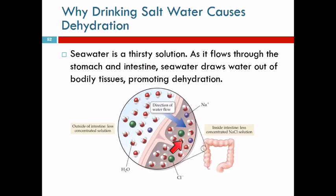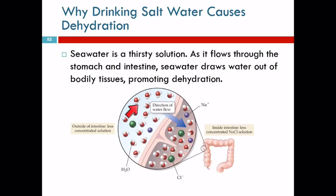So this is in your intestines and this is inside your cells. Your cells are very particular about the concentration of sodium and chloride ions that they want. If you drink salty water, these membranes will allow water to pass through, but generally not the sodium and the chloride and sugar and other larger molecules. So the water in the lower concentration is going to flow into the solution that has a higher concentration.